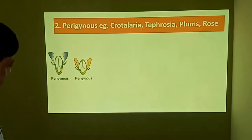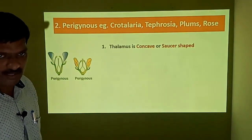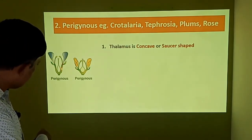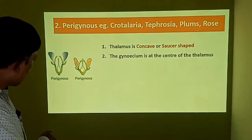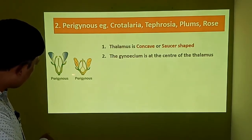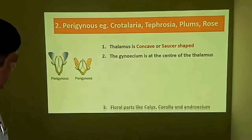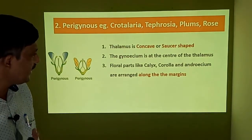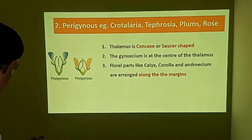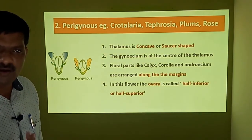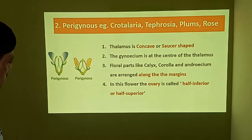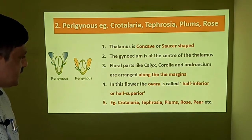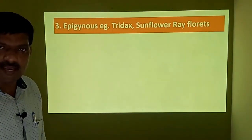In the perigynous condition, the thalamus is concave or saucer-shaped. The gynoecium is positioned at the center of the thalamus, and floral parts like calyx, corolla, and androecium are arranged along the margins of the thalamus. In this flower, the ovary is called half-inferior or half-superior. Best examples for perigynous flowers are Crotalaria, Tephrosia, plum, rose, and pear.